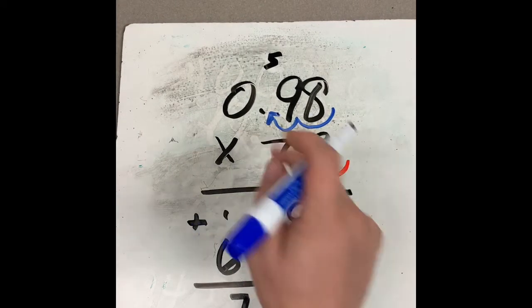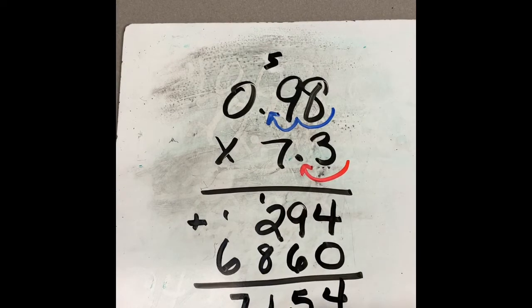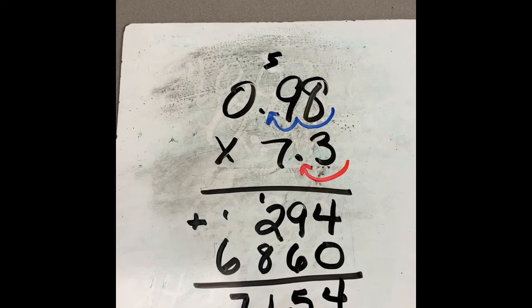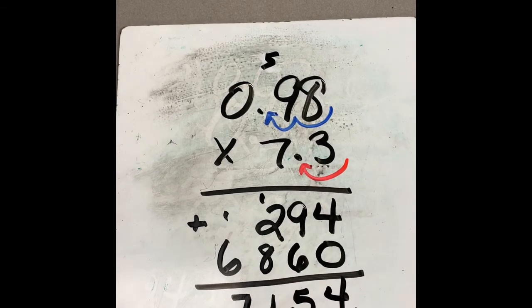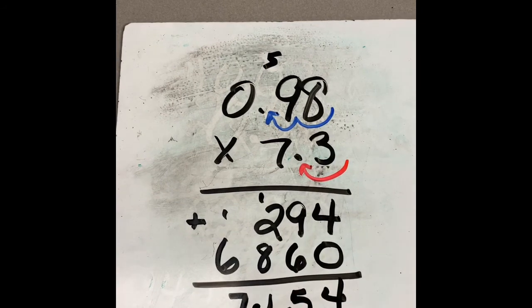So again, I had two decimal points in the front for my first factor, and I had one more decimal point for my second factor. So that's where my decimal point is going to go, right here between my seven and my one. So my answer would be 7.154.